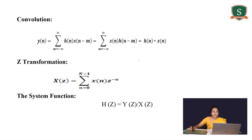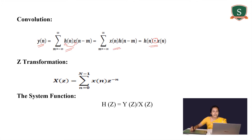A linear time invariant system can be represented by the equation y(n) = h(n) * x(n), where star represents convolution. The convolution expression is given by: summation from m = minus infinity to infinity of h(m) times x(n minus m). You can also exchange the two terms to get: summation from m = minus infinity to infinity of x(m) times h(n minus m). This relationship between the output y(n) and the input x(n) is known as convolution.